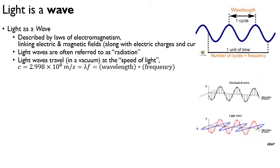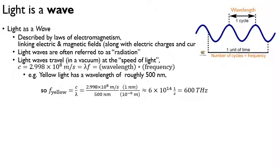Let's do an example. Yellow light — the peak wavelength from the sun — has a wavelength of roughly 500 nanometers. Let's calculate the frequency of that light. Because the speed of light C equals wavelength multiplied by frequency, we can do some algebra to solve for frequency. We divide both sides by the wavelength, so the frequency of yellow light equals the speed of light C divided by the wavelength.